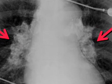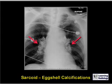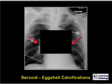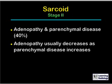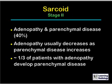This is an example of eggshell calcification in both hila in a patient with a long-standing history of sarcoid. There are no findings in the lungs suggesting silicosis, and the patient had a history of sarcoid. Stage 2 sarcoid is adenopathy with parenchymal lung disease. The adenopathy usually decreases in size as the parenchymal lung disease increases. About a third of patients with adenopathy will develop parenchymal lung disease.